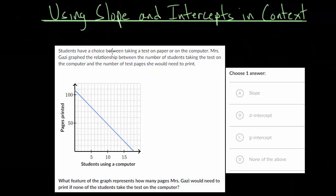Students have a choice between taking a test on paper or on the computer. Mrs. Ghazi graphed the relationship between the number of students taking the test on the computer and the number of test pages she would need to print. So basically with this graph, if no students use the computer, she has to print a lot of pages. And if everyone uses the computer, then she doesn't have to print any pages.